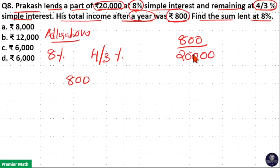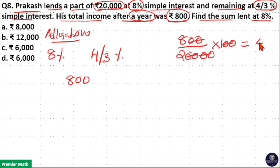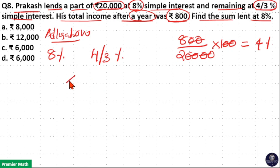So, 800 out of 20,000: cancelling zeros, 8 divided by 2 is 4%. So 800 is 4% of 20,000. Therefore, write 4% in the middle.